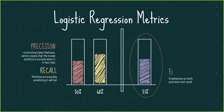Recall minimizes erroneous predictions that the campaign will fail. Both are important in the F1 score. We care about precision because content creators and donors invest a lot of time and money into their campaign and need their expectations to match reality.